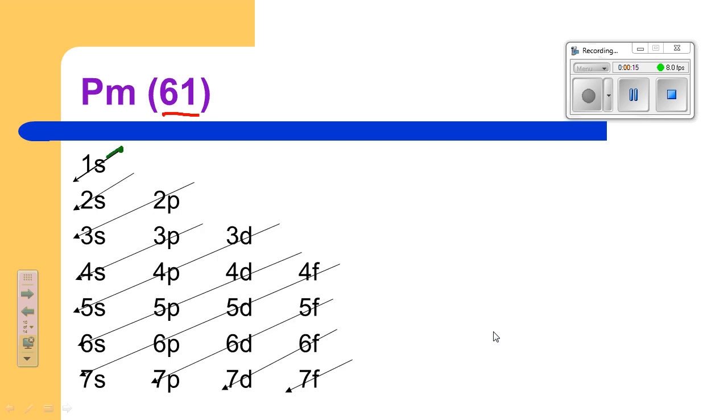The diagonal rule will start here, work our way through each one of these arrows. That's 1s which holds 2 electrons. Next we'll go through this arrow which is 2s which holds 2 electrons. Then through 2p, 6 electrons, through 3s, next through 3p, and on to 4s.